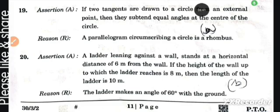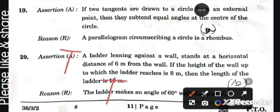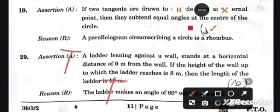Reason R: The ladder makes an angle of 60 degrees with the ground. This statement will be true, so this is correct answer option B: Both A and B are true but R is not the correct explanation of A.